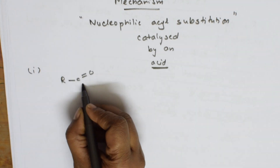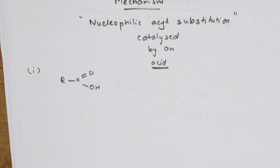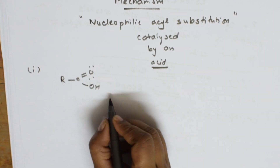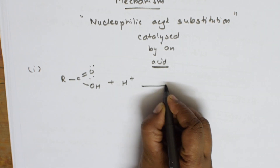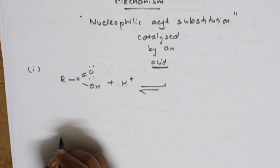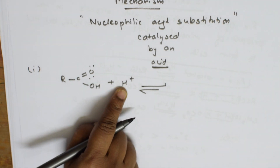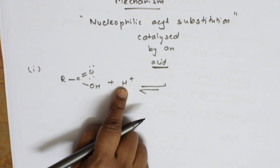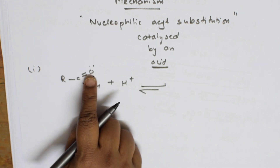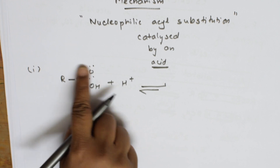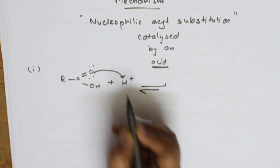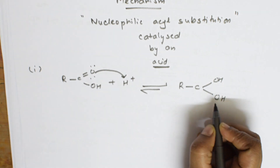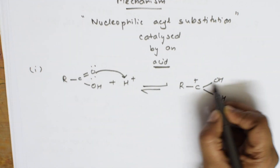Step 1: We start with acetic acid. Since the reaction is catalyzed by an acid, we take H⁺. This is a reversible reaction. A proton from the protic acid attacks the carbonyl oxygen of the carboxylic acid. Step 1 is: attack of a proton on the carbonyl oxygen of the carboxylic acid. The product formed is R-C(OH)=OH⁺ — a protonated carbonyl.